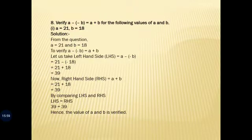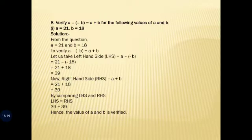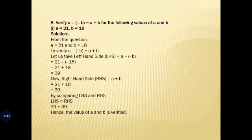Next is the verification problem: verify that a minus (minus b) equals a plus b for given values of a and b. For a = 21 and b = 18: LHS is 21 minus (minus 18) = 21 plus 18 = 39. RHS is a plus b = 21 plus 18 = 39. Comparing LHS and RHS, 39 equals 39, hence the equation is verified.